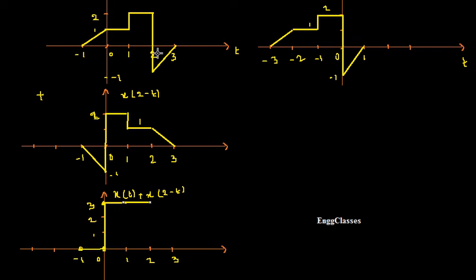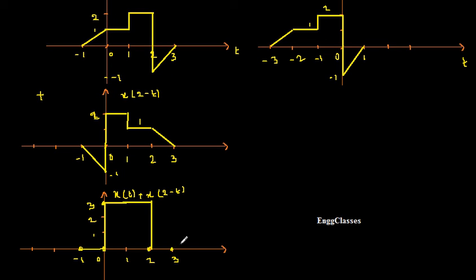At position 2, moving from 2 to 3, I take X of t amplitude as minus 1 and X of 2 minus t is plus 1. Adding them gives 0. I join the previous point at amplitude 3 to the current point at 0. At position 3, both signals are 0, so I get 0. This is the addition of the two signals — from 0 to 2, its amplitude is 3, and it looks something like this.